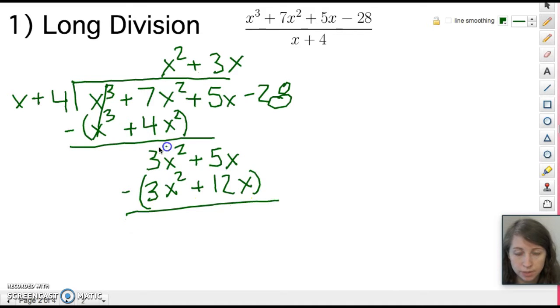The 3x² cancel each other out and we have 5x minus 12x, or 5x minus 12x, is minus 7x and the fourth step is to bring down the next term minus 28.